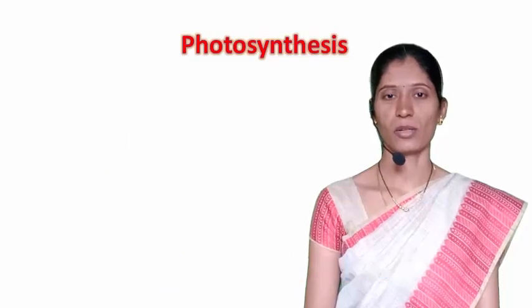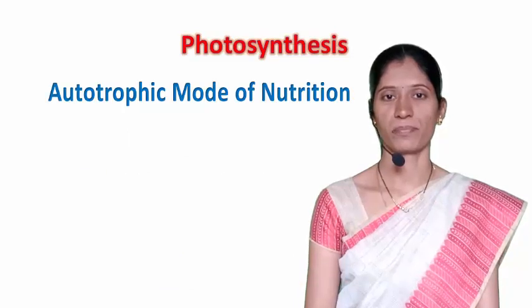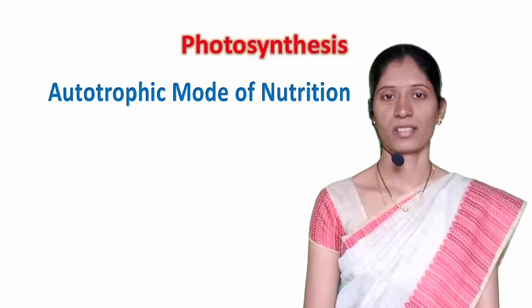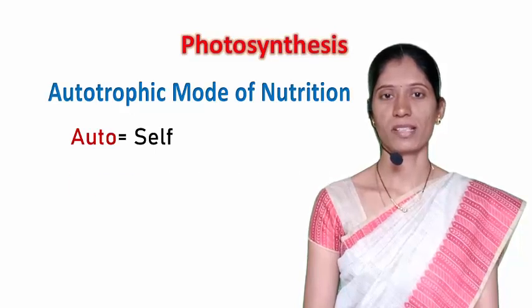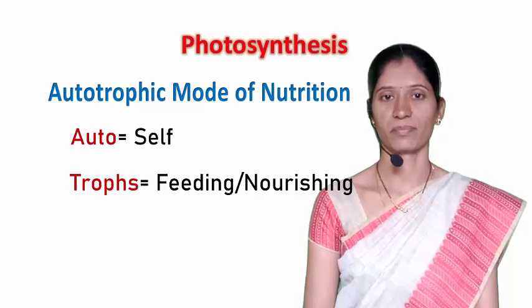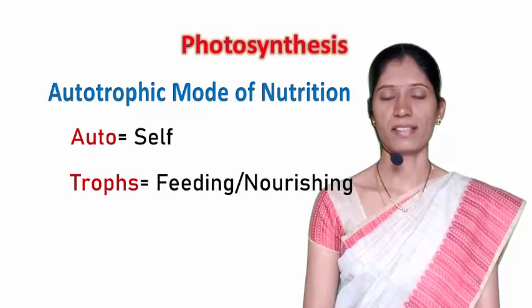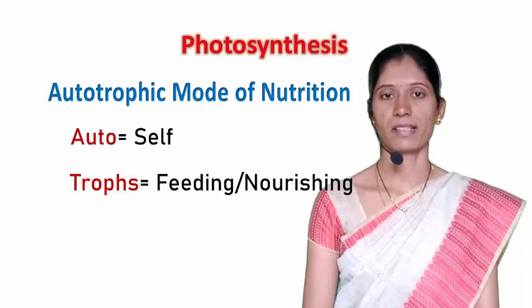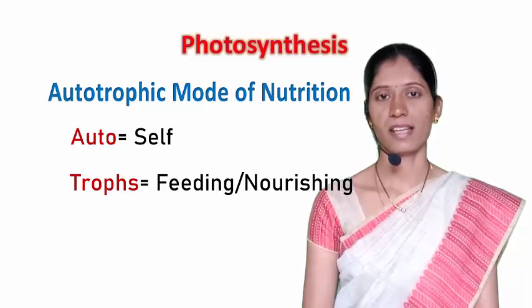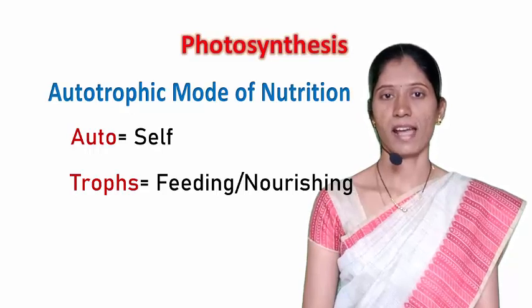Let's see Autotrophic mode of nutrition. We can break the word Autotroph as Auto and Troph. Auto means self and Troph means feeding or nourishing. So organisms that synthesize their own food are called Autotrophs, and plants, some algae and bacteria synthesize their own food — that is, they are Autotrophs.